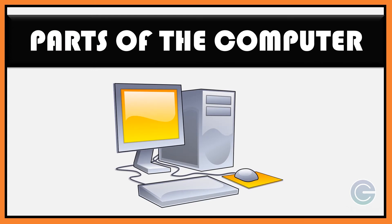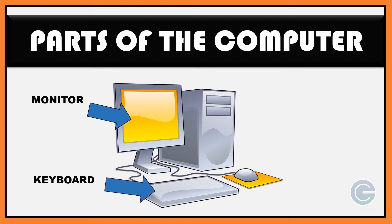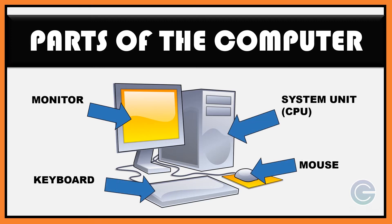A computer has many parts. These are four major parts of a computer: the monitor, the keyboard, the system unit, and the mouse. All these parts are very important. I will tell you how important they are.